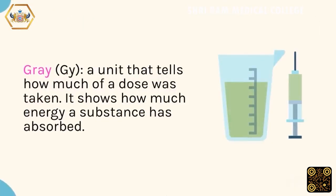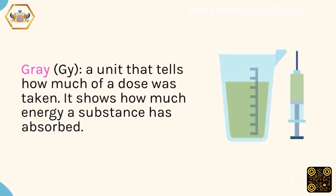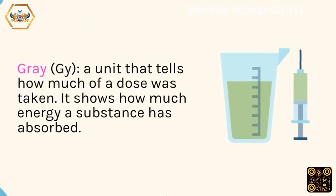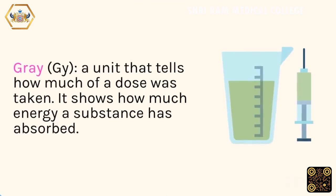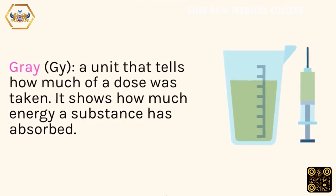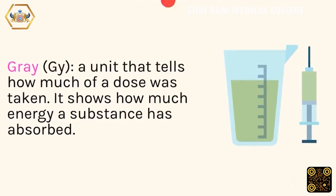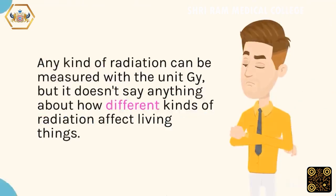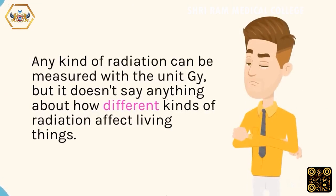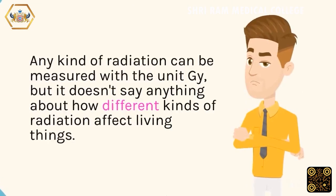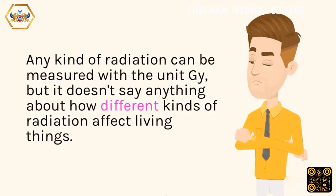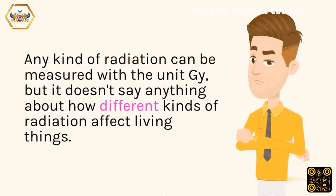Grey (Gy): a unit that tells how much of a dose was taken. It shows how much energy a substance has absorbed. Any kind of radiation can be measured with the unit Gy, but it doesn't say anything about how different kinds of radiation affect living things.